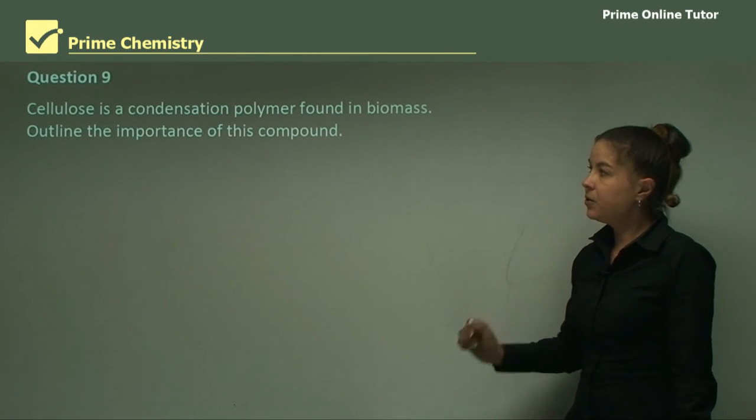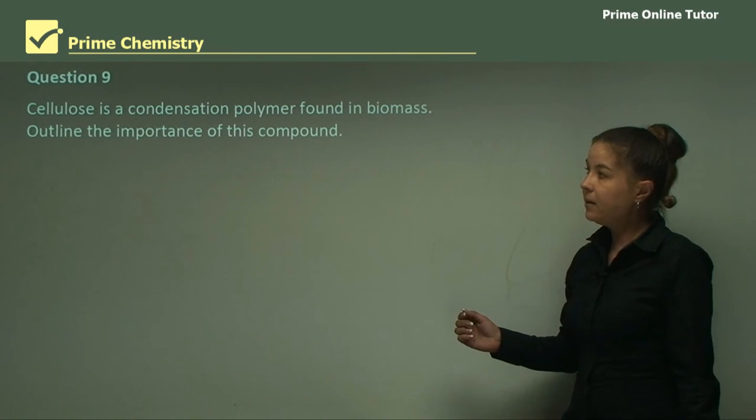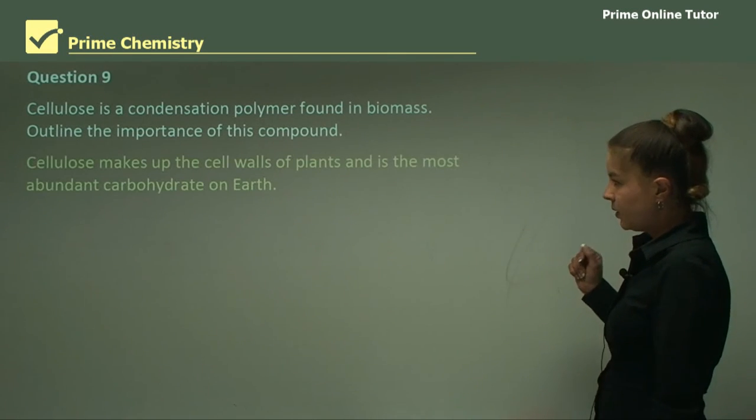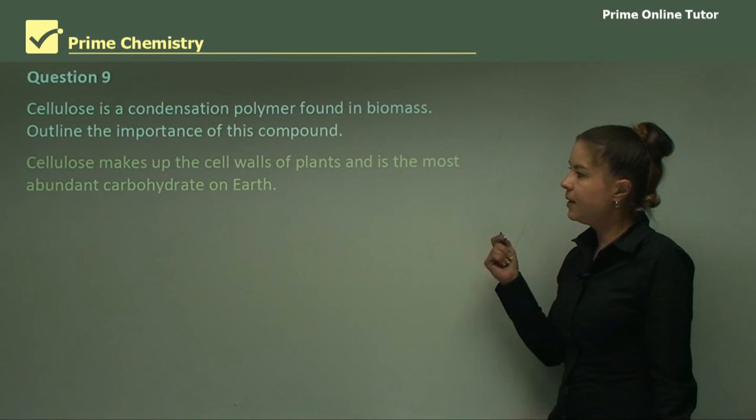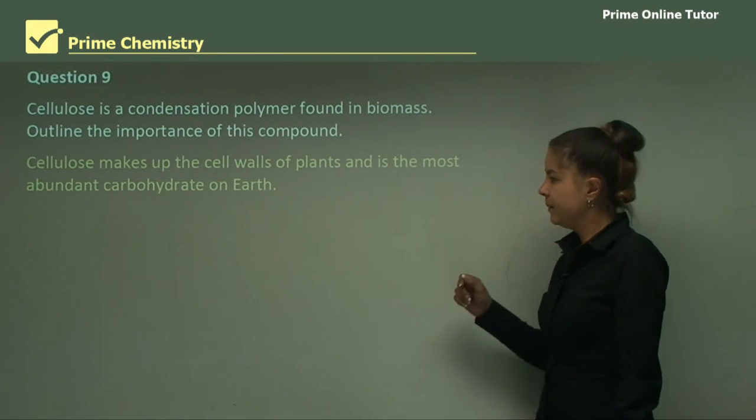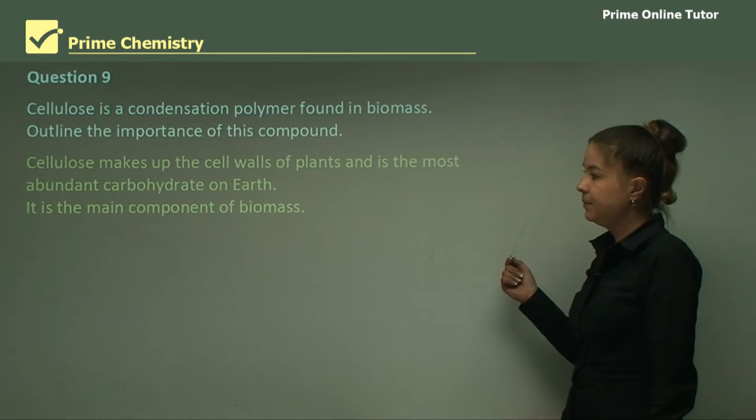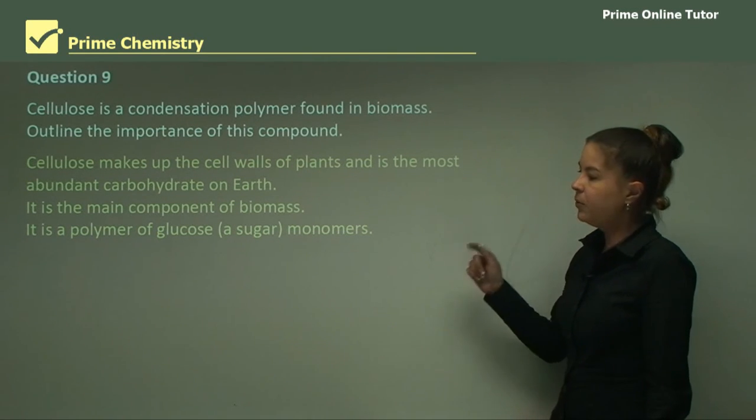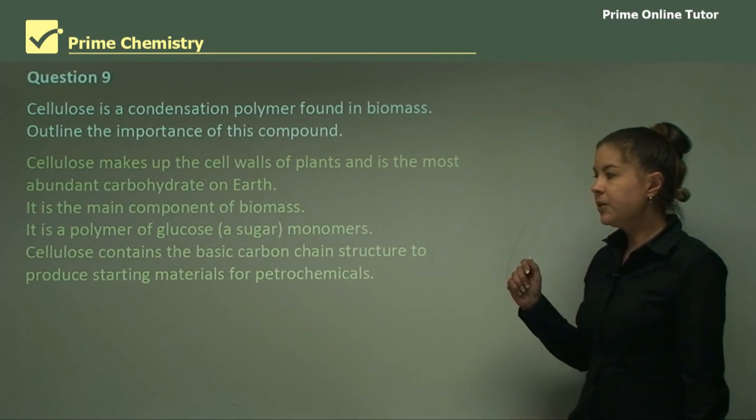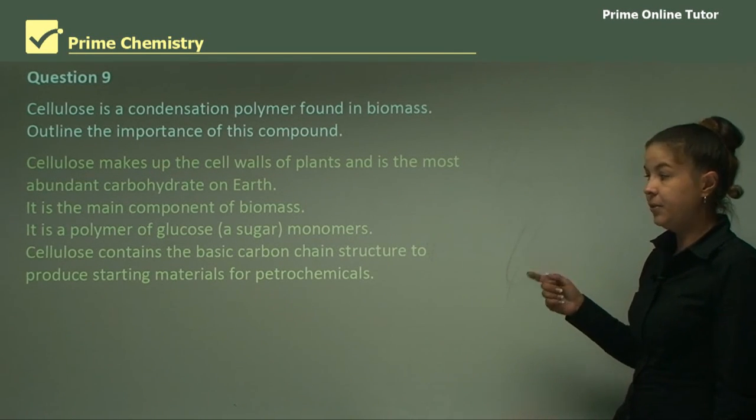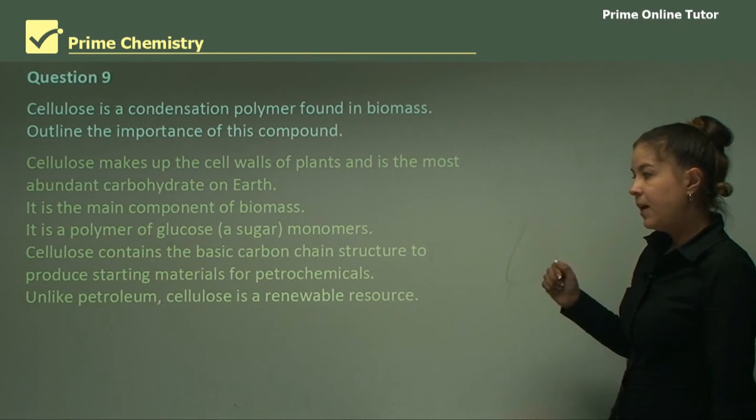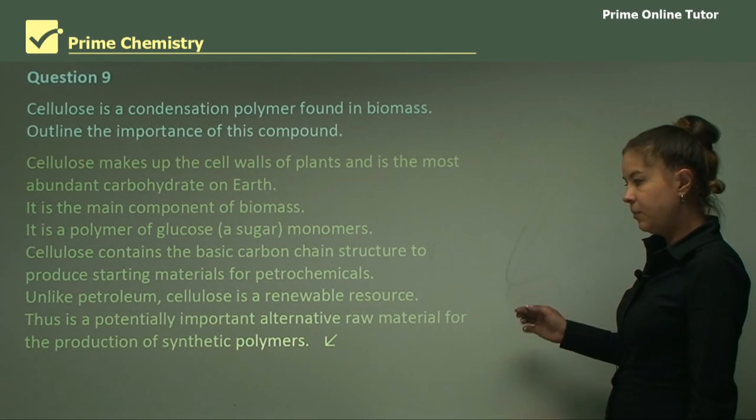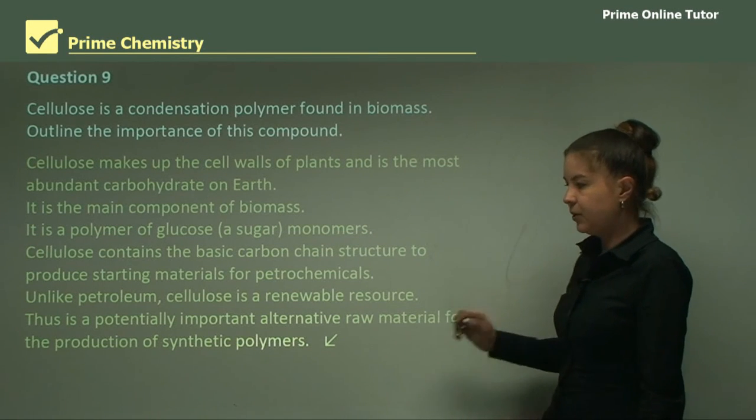Question nine. Cellulose is a condensation polymer found in biomass. Outline the importance of this compound. So now we have to list a few important things about cellulose. Cellulose makes up cell walls of plants and is the most abundant carbohydrate on earth. It is the main component of biomass. It's a polymer of glucose, which is a sugar. So it is a polymer of glucose monomers all put together. Cellulose contains the basic carbon chain structure to produce starting materials for petrochemicals. And unlike petroleum, cellulose is a renewable resource. So thus, it's a potentially important alternative raw material for the production of synthetic polymers.